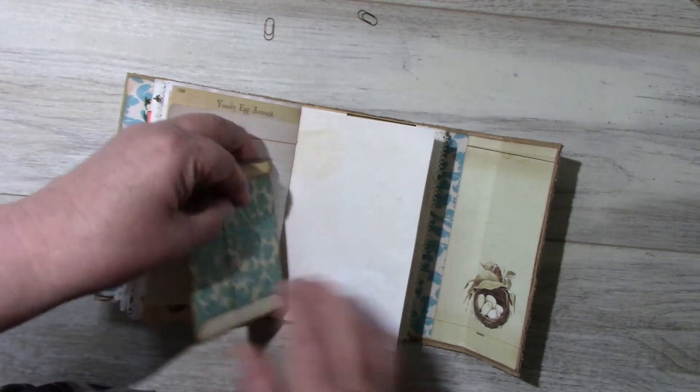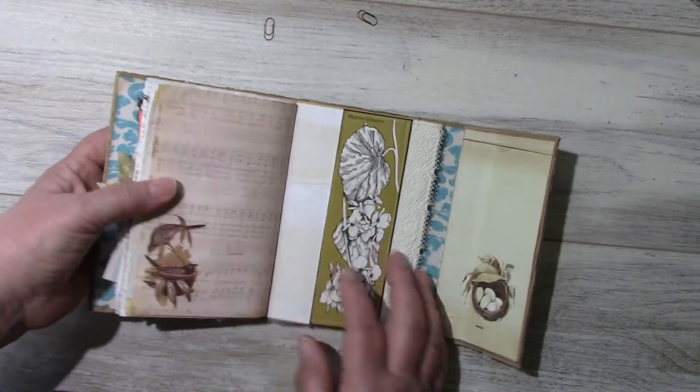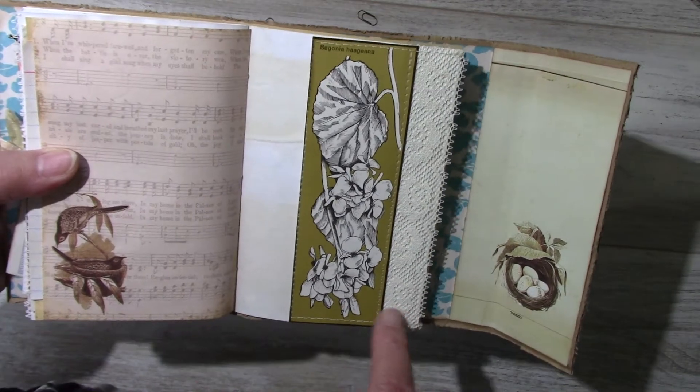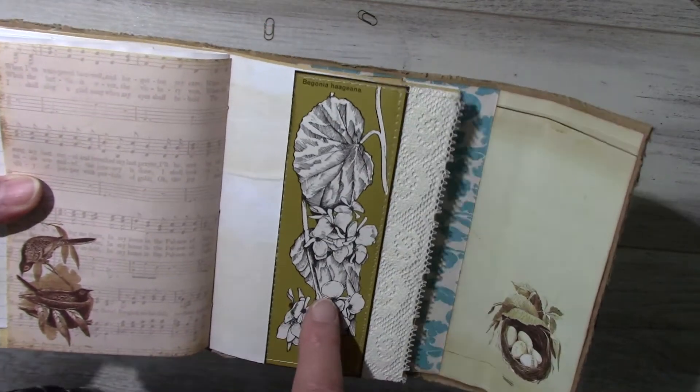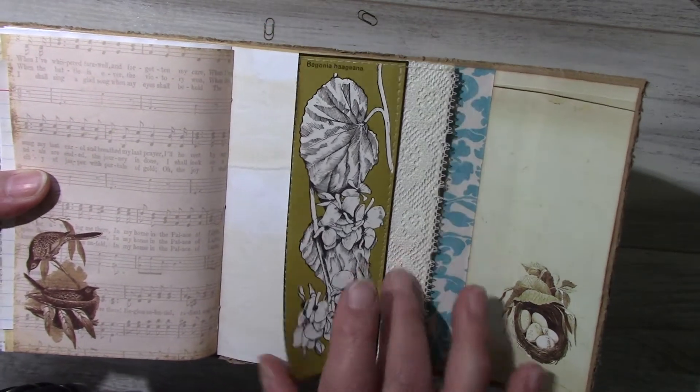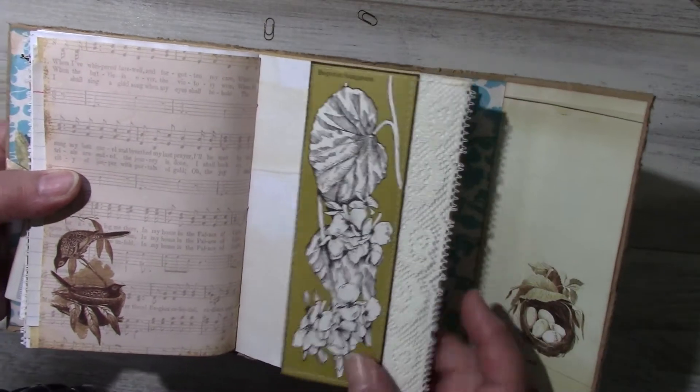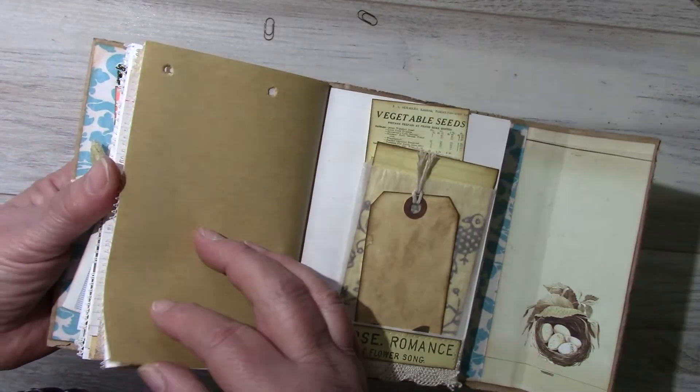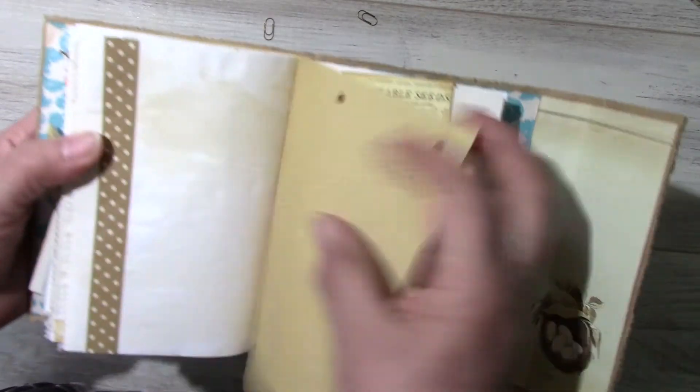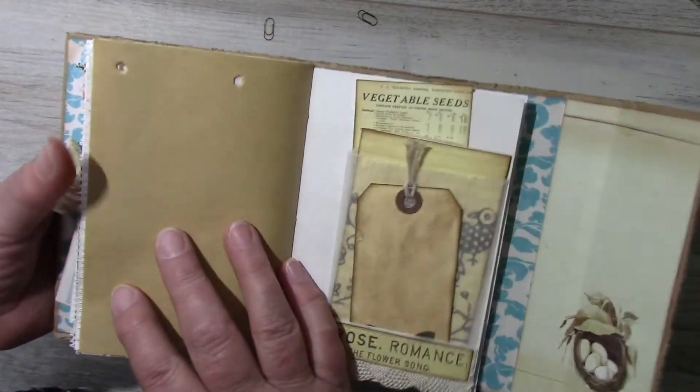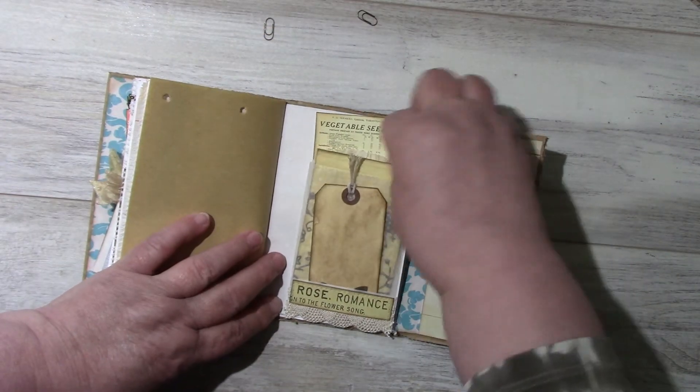Another flip out with a piece from that vintage gardening book that flips out. It's the back of it. Craft paper, another little glassine bag, a journaling card, another drilling card, and a tag.